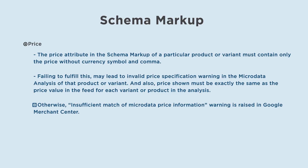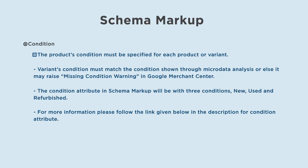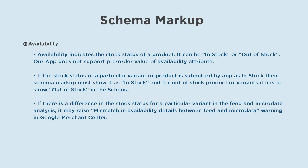Otherwise, an insufficient match of microdata price information warning is raised in Google Merchant Center. The product's condition must be specified for each product or variant. The variant's condition must match the condition shown through microdata analysis, or else it may raise a missing condition warning in Google Merchant Center. The condition attribute in schema markup will have three conditions: new, used, and refurbished.